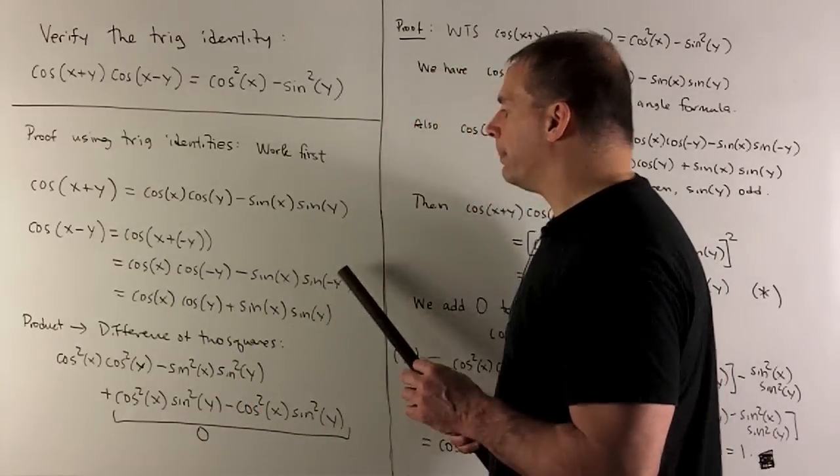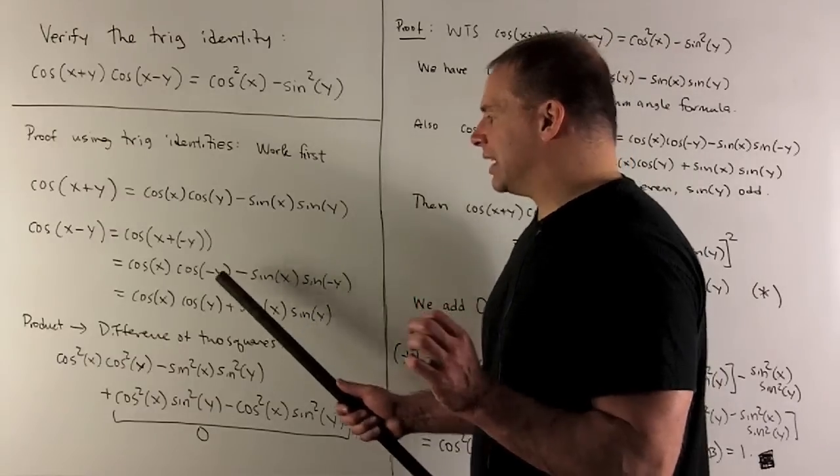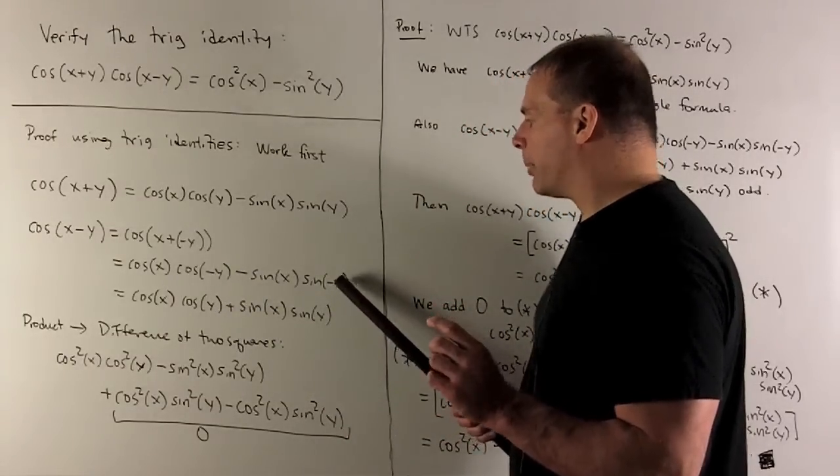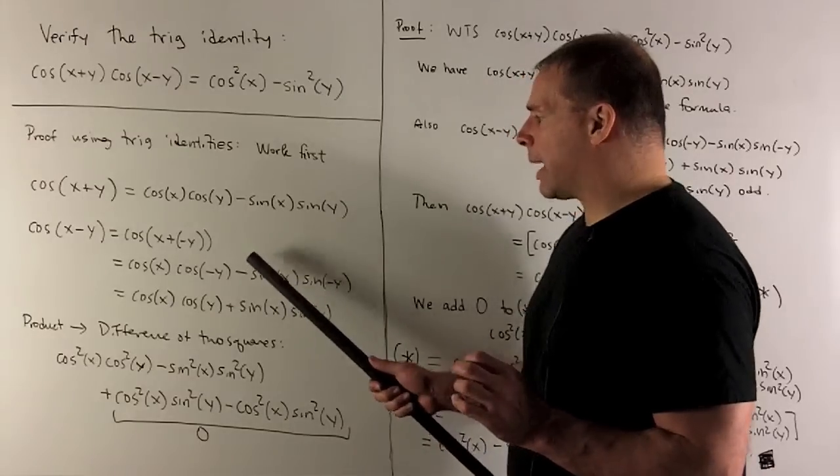Okay, we write that out. And then I note, cosine is an even function, so that minus sign goes away. Sine is an odd function, so I pull it through. It's going to turn our minus sine to a plus.